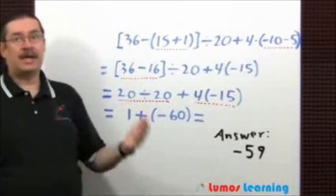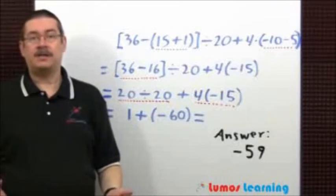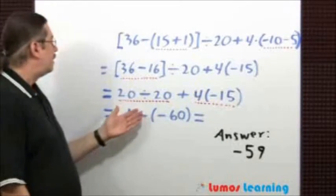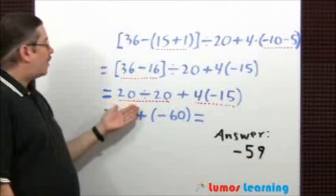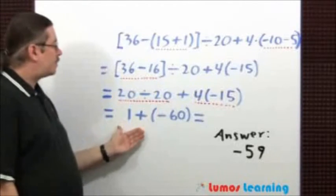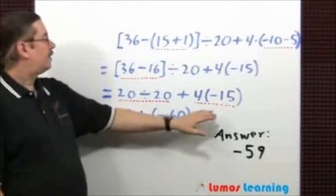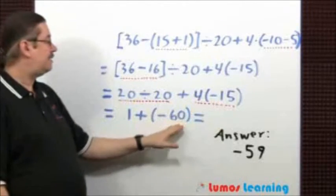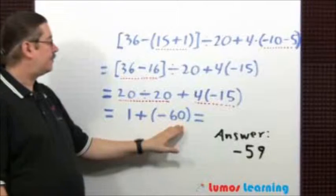Now I'm going to perform multiplications and divisions from left to right. 20 divided by 20 is 1, and 4 times negative 15 is negative 60.